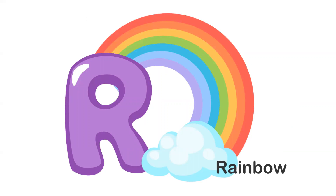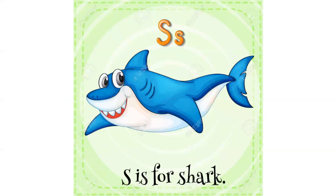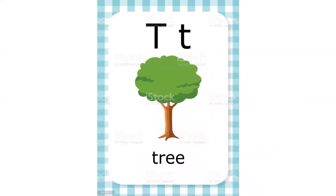R — R is for rainbow, R is for rainbow. S — S is for shark. T — T is for tree, T is for tree.